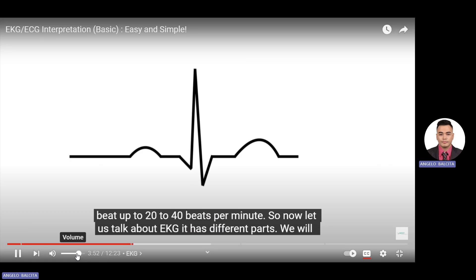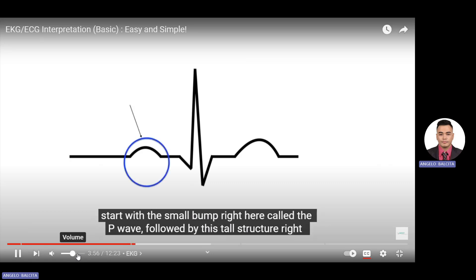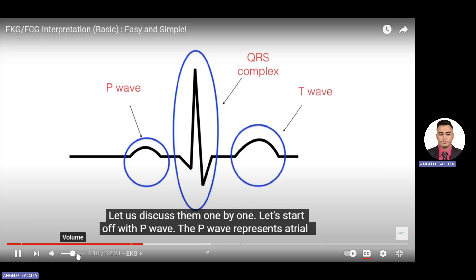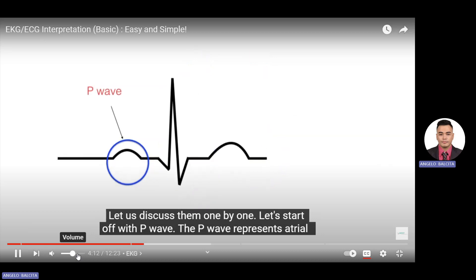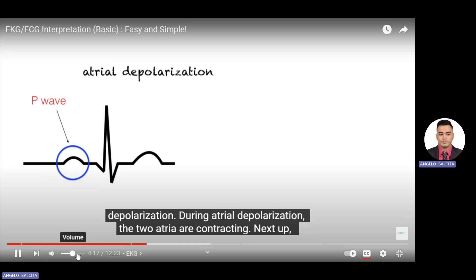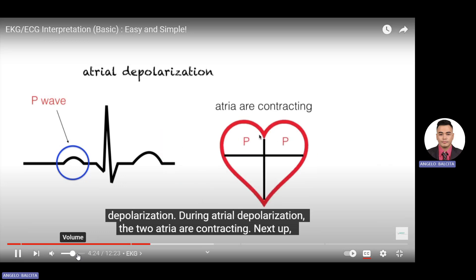Now let's talk about EKG. It has different parts. We will start with the small bump called the P wave, followed by the tall structure called the QRS complex, and lastly the bump after the QRS complex called the T wave. The P wave represents atrial depolarization — during atrial depolarization, the two atria are contracting.